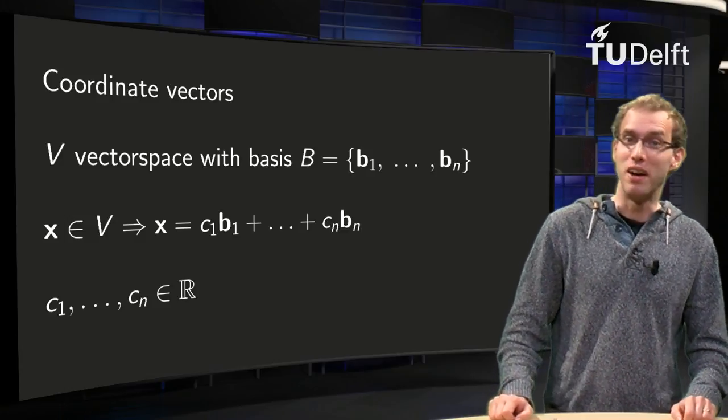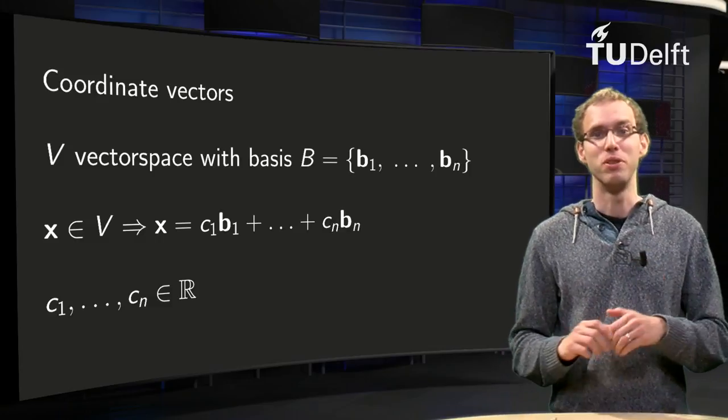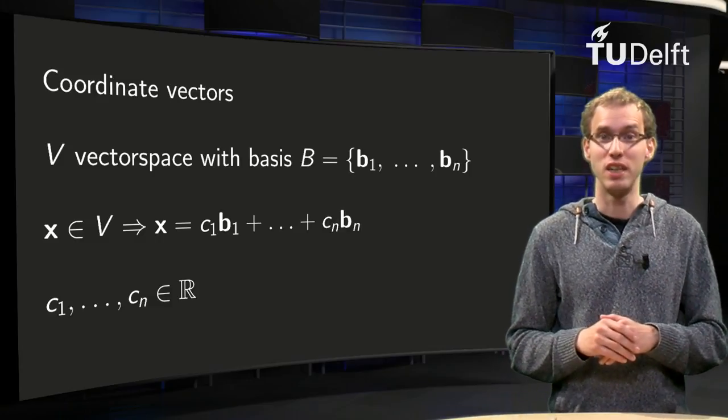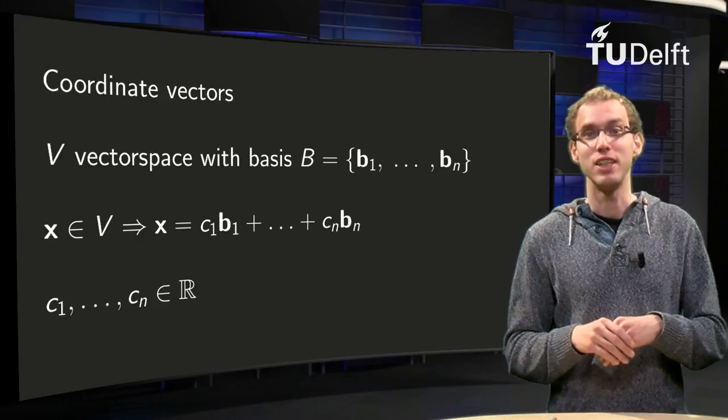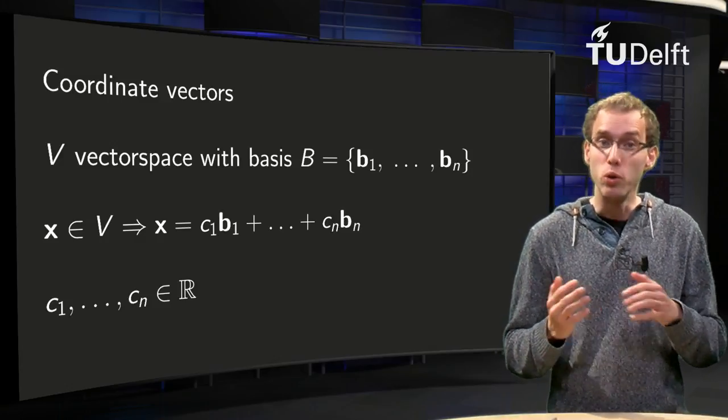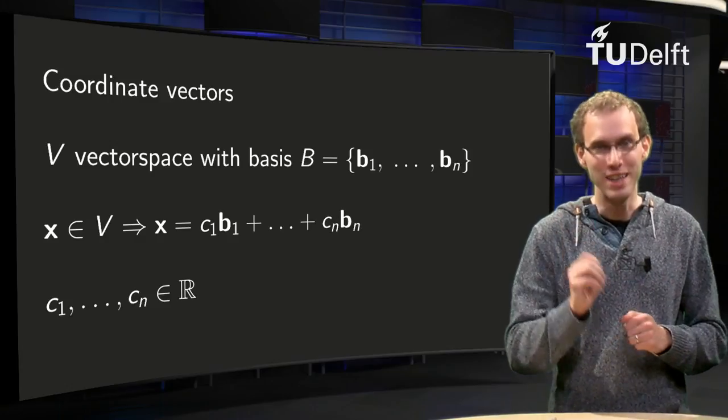Vectors in a general vector space are fun, but for many computations our normal vectors in R^n are much nicer. Can we link those general vectors in some way to our normal vectors? Yes we can.